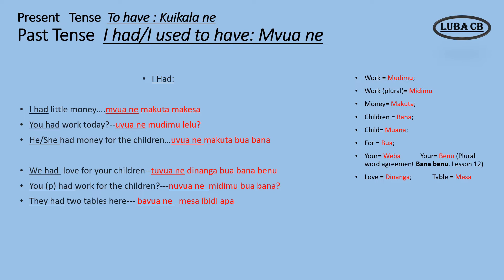She had money for the children: Uv-ne makuta bua-bana. We had love for your children: Tu-vu-ne jinanga bua-bana-benu.